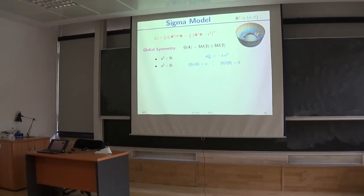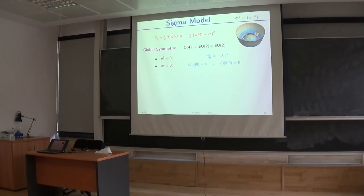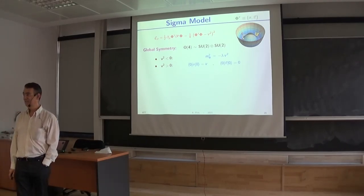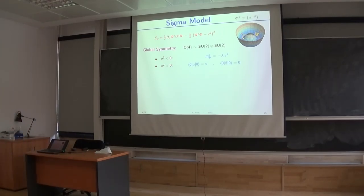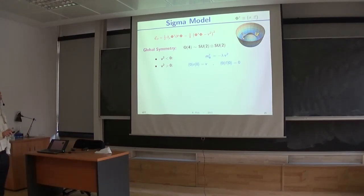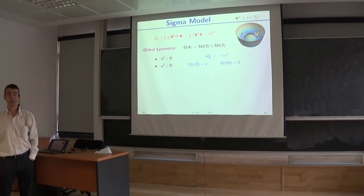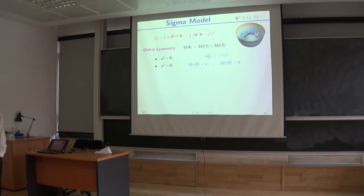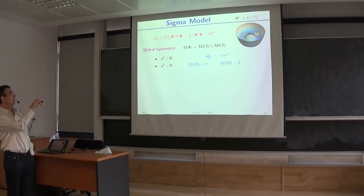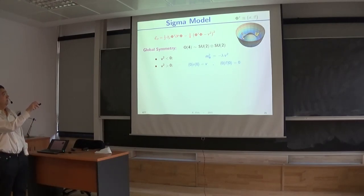Let me start with a very old model. This is not the Higgs potential. This is the so-called linear sigma model, introduced in the 50s to describe biophysics. The potential is the same. Let me just introduce notation: I take four real scalar fields and put them in a four-dimensional vector, calling one of the four fields sigma — but this is just notation. Now you write this Lagrangian, which is just the derivative of the transposed field times the field, plus the potential, which has this form.